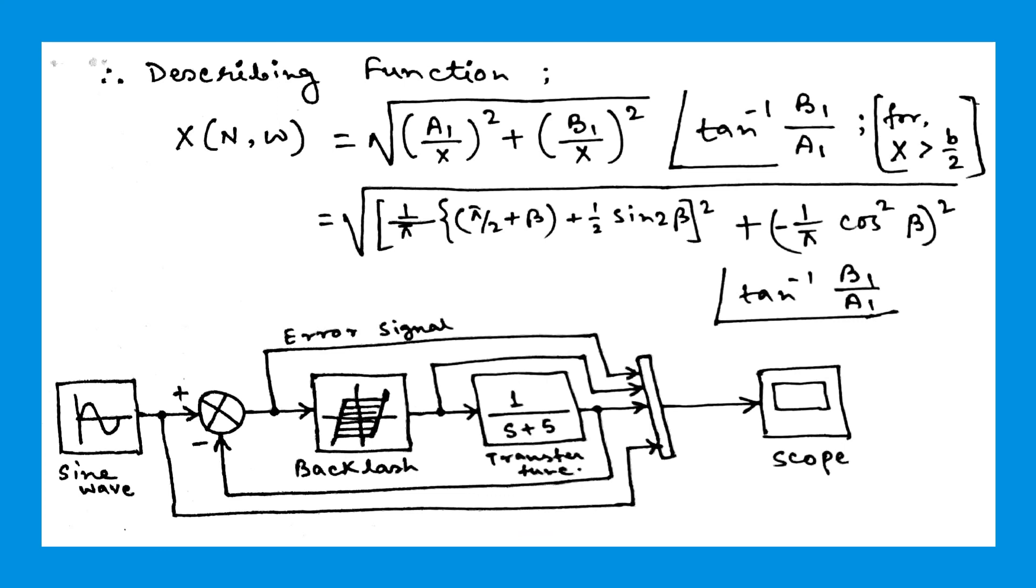So after that, if we go for the practical evaluation or practical observation, then we have to go for the block diagram approach. Here you can see that the block diagram is given. In the block diagram there will be some blocks: the sinusoidal wave as source, summing block, the nonlinear block of backlash, and the transfer function of the system. Here we assume the transfer function of the system is 1 divided by (s plus 5). You can take any other transfer function also, and the output block is scope.